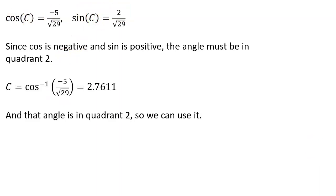So let's go ahead and solve. So I'm going to work off of the cosine equation. You can also use the sine equation if you want. But working off the cosine equation, I can do the cosine inverse of negative 5 over root 29. And I get 2.7611 as my solution.